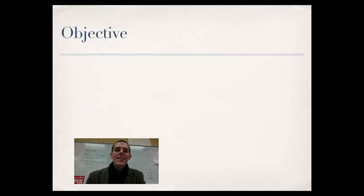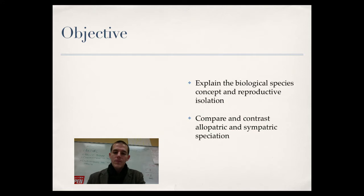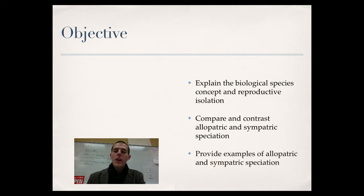By the end of this video, things that I need you to know or be able to do. First: explain the biological species concept and reproductive isolation — when we talk about a species, what is the definition, and what makes one species separate from another? Second: compare and contrast allopatric and sympatric speciation, and provide an example of each.